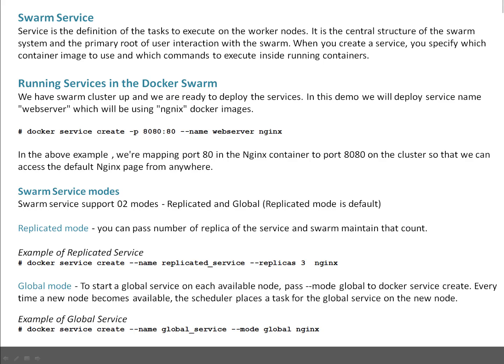For running services in Docker Swarm, we have the Swarm Cluster up and we are ready to deploy services. In this demo, we will deploy a service named web server which will use the Nginx Docker image. The command is: docker service create -P, where port 8080 is exposed and forwarded to port 80, and --name is web server, with Nginx as the image. We are mapping port 80 in the Nginx container to port 8080 on the cluster so that we can access the default Nginx page from anywhere.